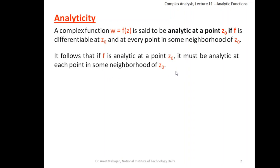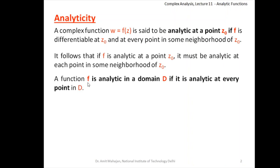Because at each point of the neighborhood the function is differentiable, we can draw on those points at least a neighborhood of distance from that point up to z₀. And finally, a function f is said to be analytic in a domain D if it is analytic at every point in that domain D — that means at every point we can draw a neighborhood such that every point inside that neighborhood is differentiable.